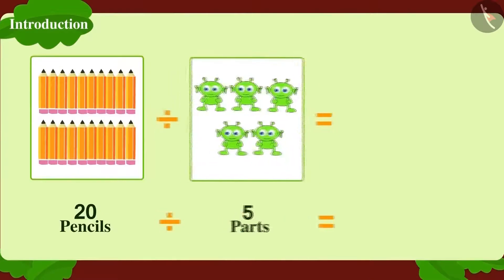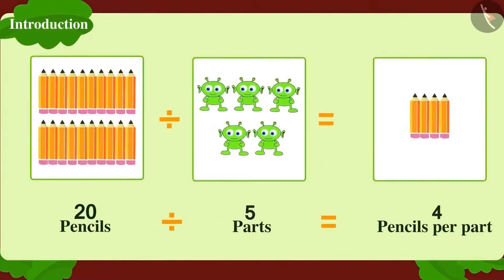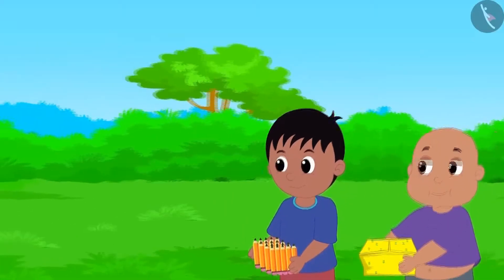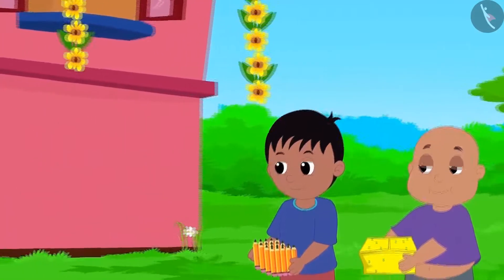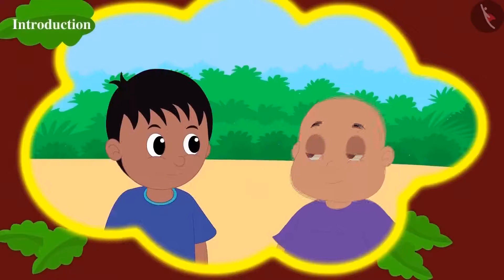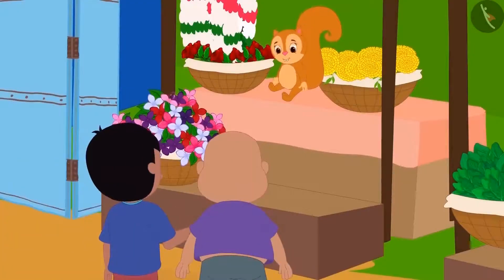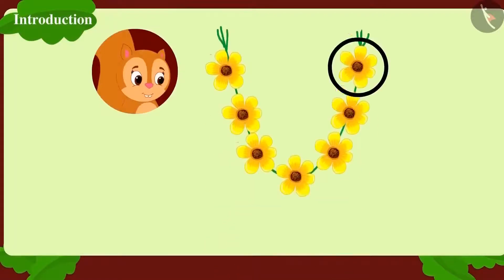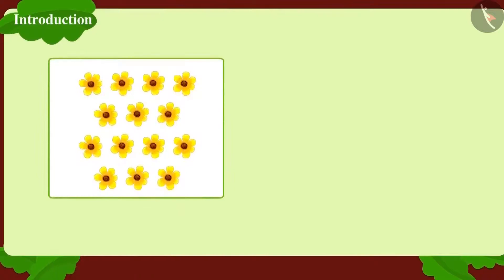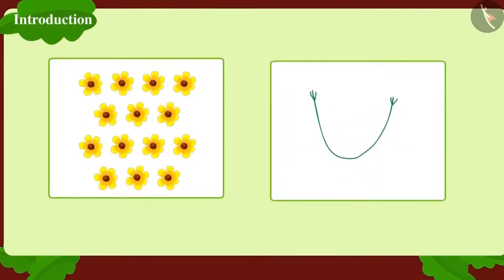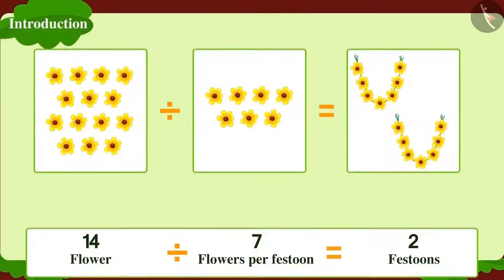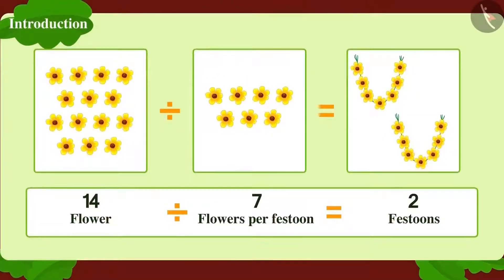When Raju and Bablu reached home, they saw their house decorated with beautiful festoons. They thought of buying festoons to decorate Jeev's flying saucer too. They ran to Chanda's flower shop — Chanda makes each festoon with a bunch of seven flowers. If they want to use fourteen flowers, how many festoons will they have to buy? Dividing fourteen flowers into festoons of seven flowers each gives two festoons.